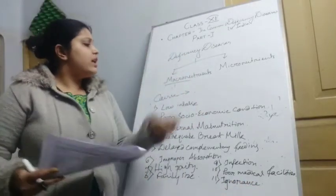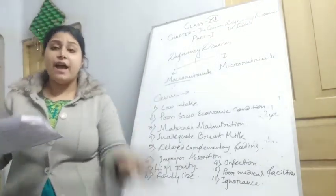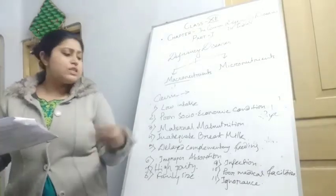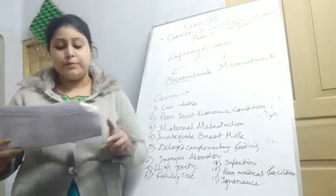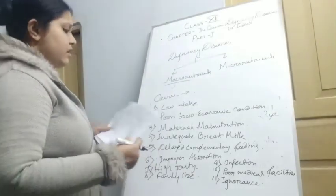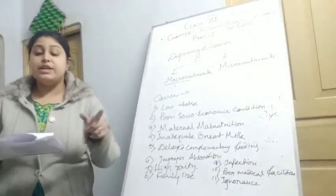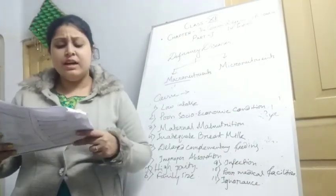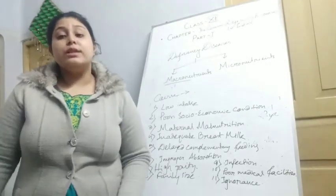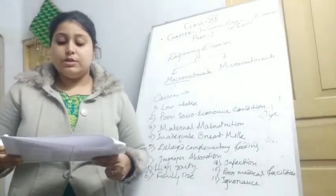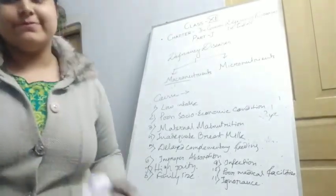The eleventh cause is ignorance. Even if the mother notices that her child has retarded growth, she may not be aware of it being a condition, and this ignorance becomes a main cause of the problem. Additionally, there are other causes such as improper hygiene and sanitation, religious customs, and increased morbidity rates. In the next class, we will discuss more on this topic. Thank you.